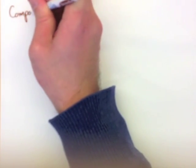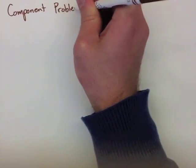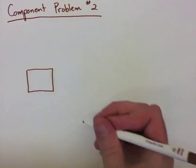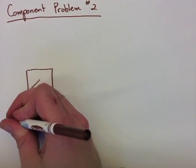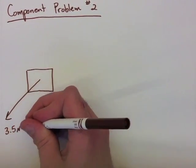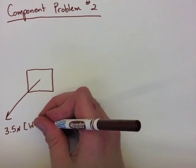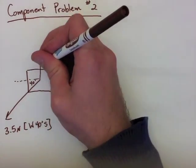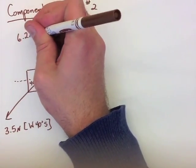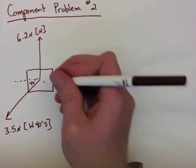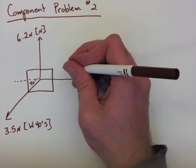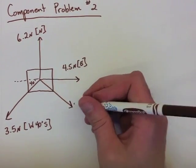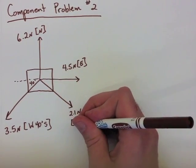For our final example, we're going to set it up for you and allow you to try the problem at home. What you need to do is set up a diagram showing all the forces that are pulling on the box. There are actually four in this case, not three. The first being 3.5 newtons west, 40 degrees south. The second being 6.2 newtons north. The third being 4.5 newtons east. And the final one being 2.1 newtons south, 34 degrees east.